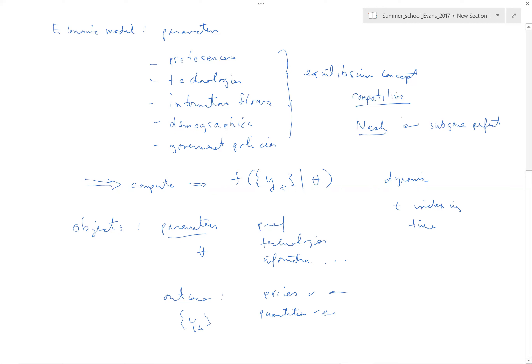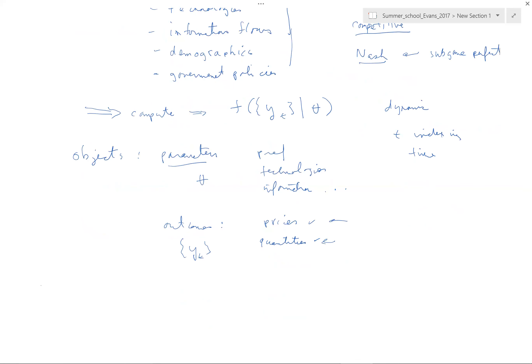We have equilibrium concepts, preferences, technology, information flows, demographics, government policies, and they're going to be parameterized by theta and produce outcomes. That's a general framework — an overview of what theoretical economists do. Theory takes these objects and maps them into a joint density over outcomes. That's what theory does.